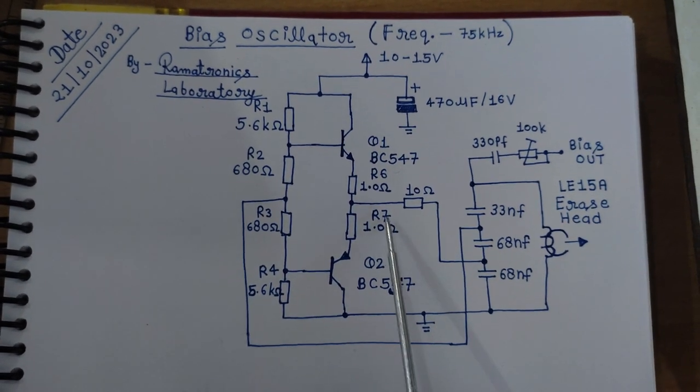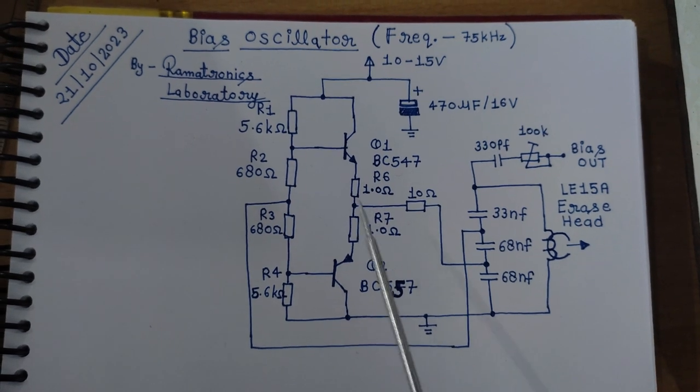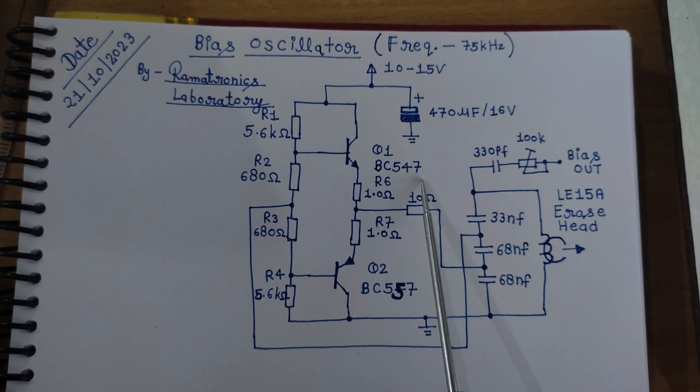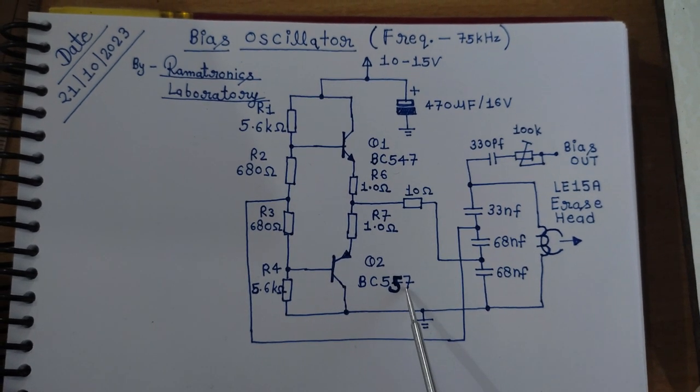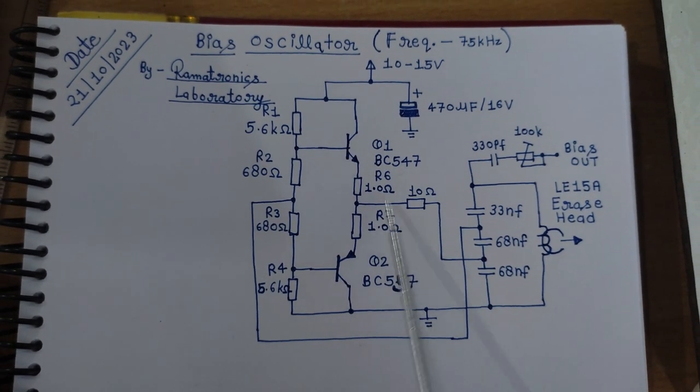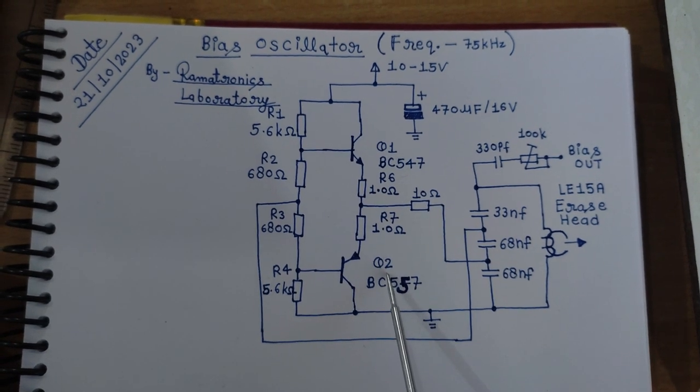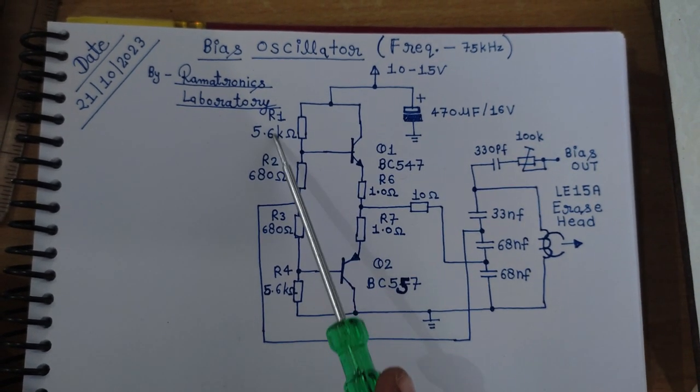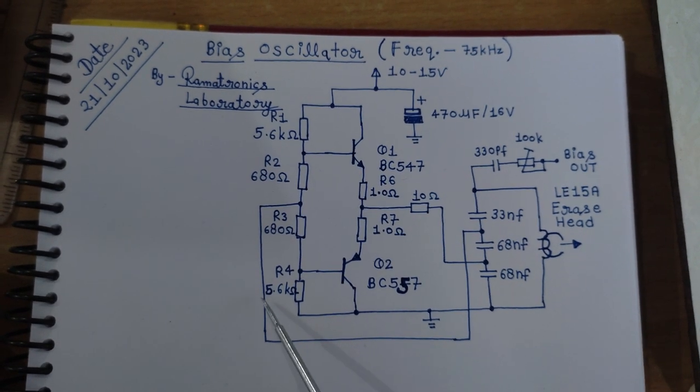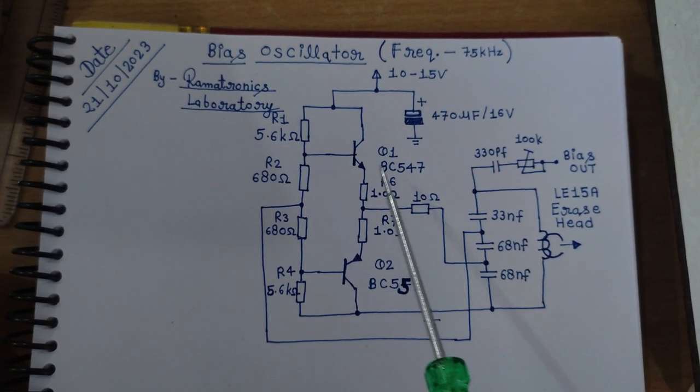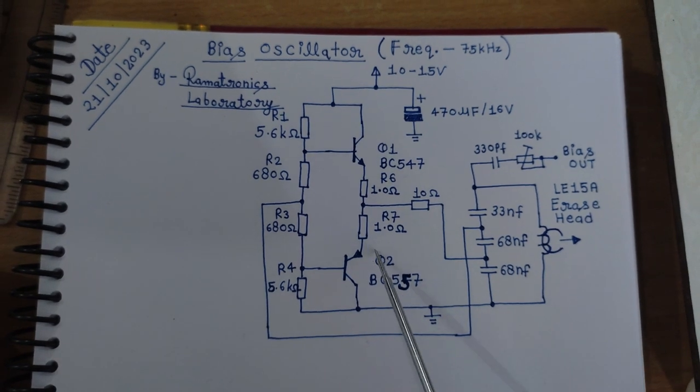It consists of two bipolar junction transistors: BC547 NPN transistor and BC557 PNP transistor. And these two transistors are connected in push-pull configuration. And here are four resistors R1, R2, R3, and R4 that create a voltage divider to bias the base of Q1 and Q2.